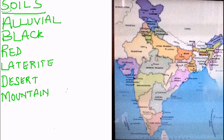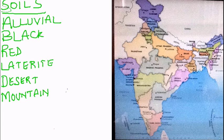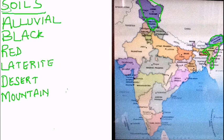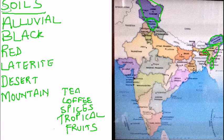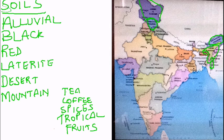The next soil is the mountain soil, found in hilly slopes and formed due to the deposition of organic matter from forests. It is rich in humus but poor in potash and lime. The areas where this soil is found are Assam, Jammu and Kashmir, Sikkim, and Himachal Pradesh. The crops generally found in these soils are tea, coffee, spices, and tropical fruits.